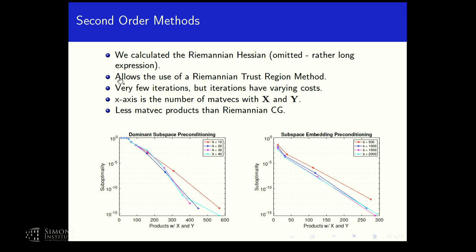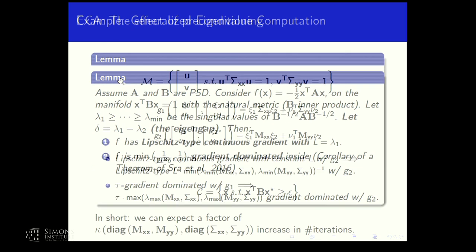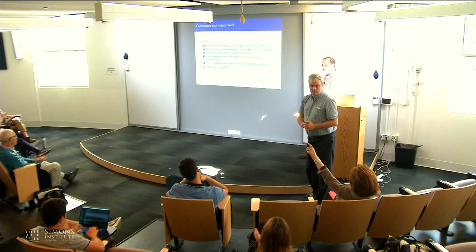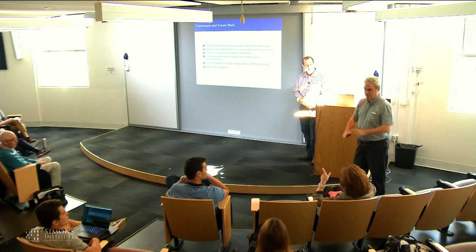Concluding remarks: randomized numerical linear algebra achieves high accuracy when used with preconditioning, and in some cases you do want that. While crude approximations suffice in many data science scenarios, if you want high accuracy you cannot use sketch-and-solve — you need preconditioning. The way to introduce preconditioning here is by changing the Riemannian metric, applied here to quadratic equality constraints. This work is still in progress.